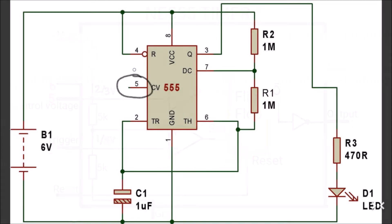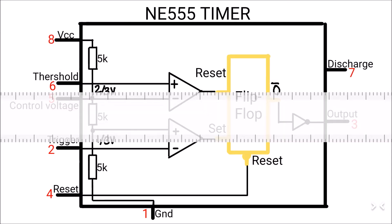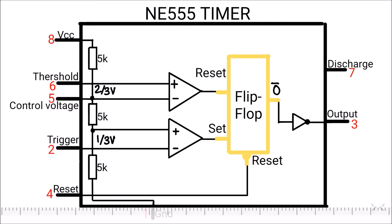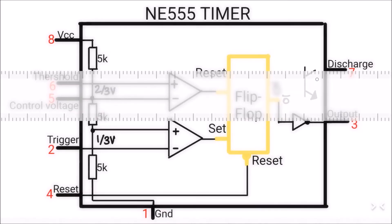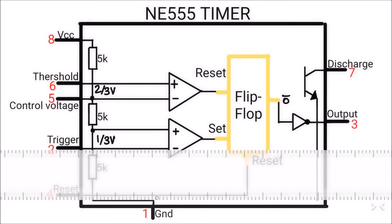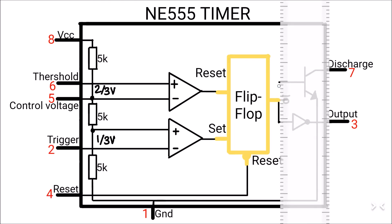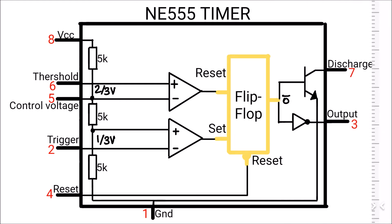Pin six is the threshold pin, which connects to the positive input of the second comparator, whose output is connected to the reset pin of the flip-flop. Now, the most important pin is the discharge pin, which connects to the collector of bipolar junction transistor, or in short, BJT. The emitter of this transistor is connected to the ground, and the base of this transistor connects to the output of the flip-flop. And that basically makes up our NE555 timer.